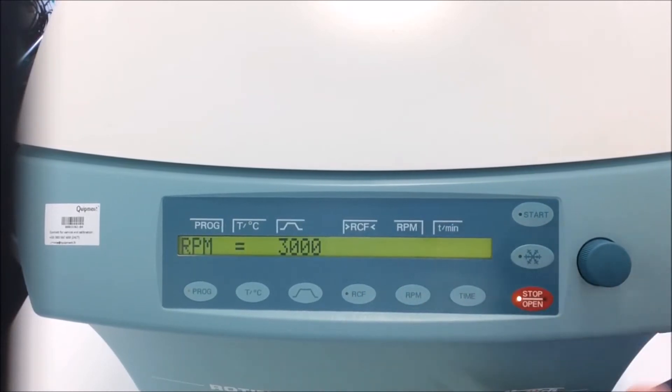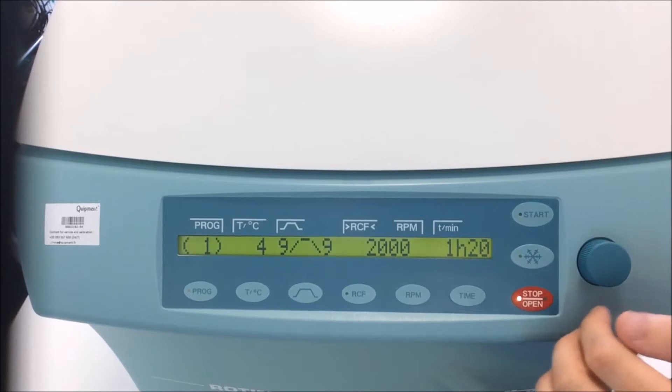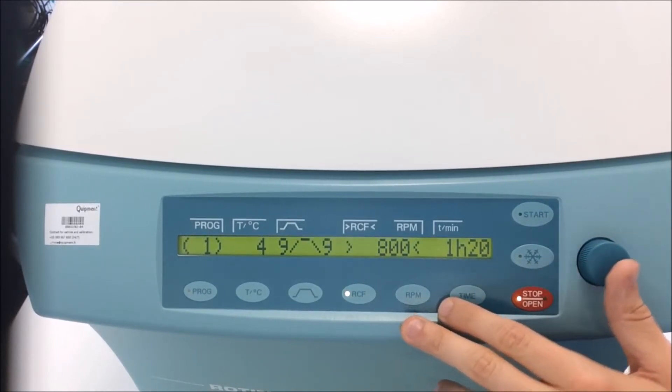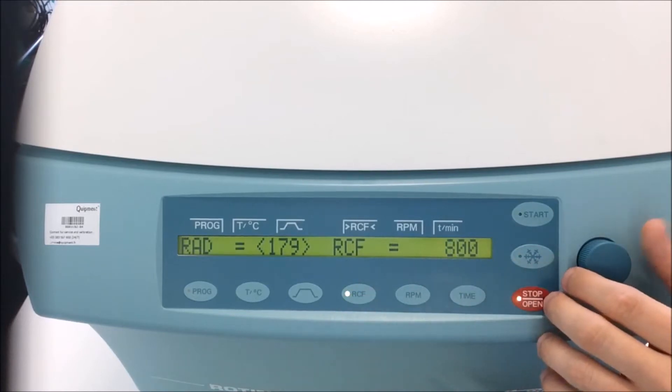I will decrease the speed, so let's say 2000 instead of 3000, which is in RCF 800. Of course, I can also modify the RCF. I don't want to do that.